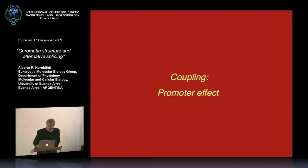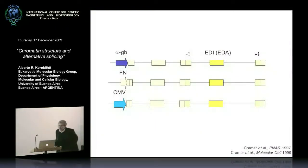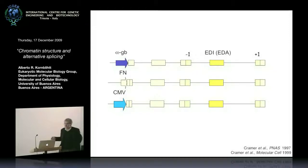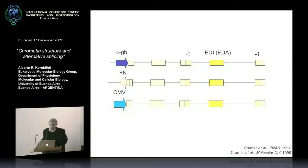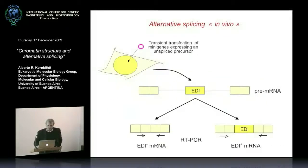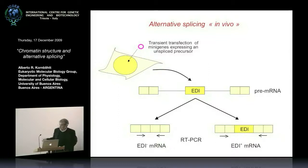The recruitment or kinetics of splicing can also affect Pol2 transcription. The idea of coupling came from experiments done in my lab by Paula Kramer, in which we changed the promoter driving different mini-genes reporting alternative splicing of a cassette exon called ED1 or EDA. We tested about ten different promoters; here we show three paradigmatic cases: alpha-globin, fibronectin, and cytomegalovirus promoters. We transfected cells with these mini-genes and assessed alternative splicing by RT-PCR.